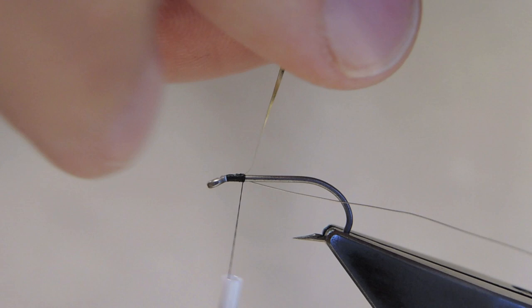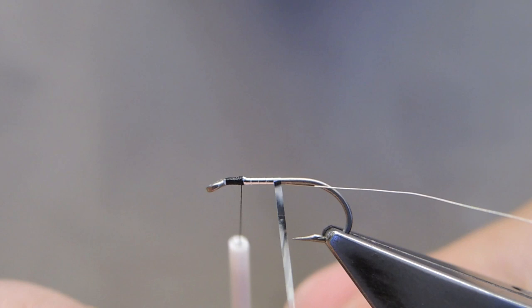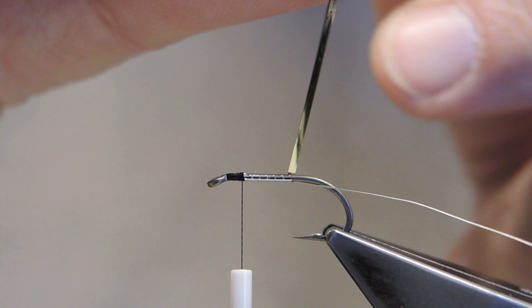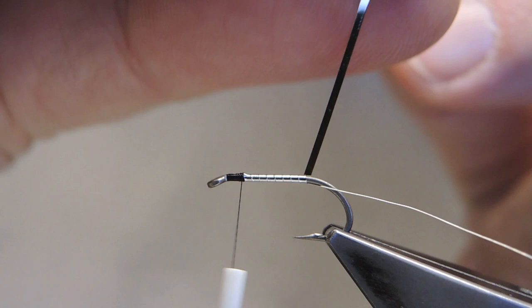I'll keep the tying thread where it is and wrap the mylar in touching turns, trapping the ribbing material at the same time. Touching turns to the end of the shank.